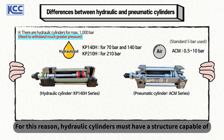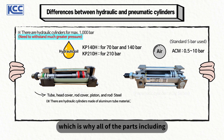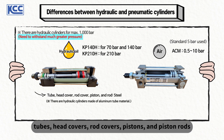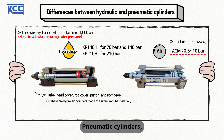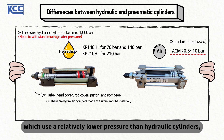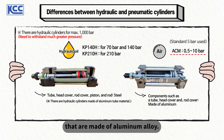For this reason, hydraulic cylinders must have a structure capable of withstanding much greater pressure than pneumatic cylinders, which is why all of the parts including tubes, head covers, rod covers, pistons, and piston rods are made of steel. Pneumatic cylinders, which use relatively lower pressure than hydraulic cylinders, typically consist of tubes, head covers, rod covers, and other parts that are made of aluminum alloy.